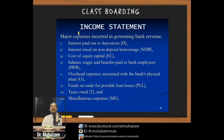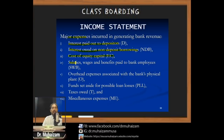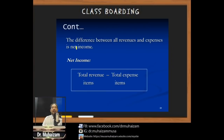Major bank expenses include interest paid on customer deposits, interest owed on non-deposit borrowings, cost of equity capital, salaries paid to bank employees, overhead costs for physical premises, funds set aside for possible loan losses, taxes paid to the government, and miscellaneous expenses. The difference between all revenues and expenses yields the bank's net income for that year.